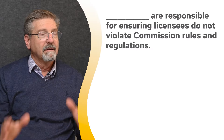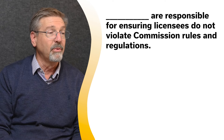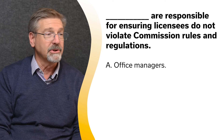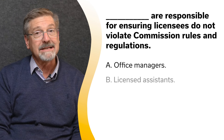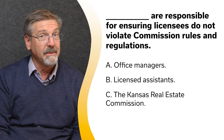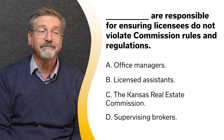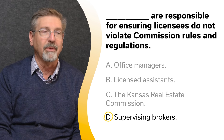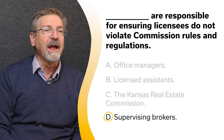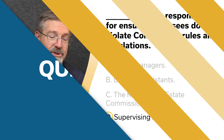Blank are responsible for ensuring licensees do not violate Commission rules and regulations. A. Office managers. B. Licensed assistants. C. The Kansas Real Estate Commission. Or D. Supervising brokers. The correct answer is D — supervising brokers. Supervising brokers are responsible for ensuring their associated licensees abide by Commission rules and regulations.